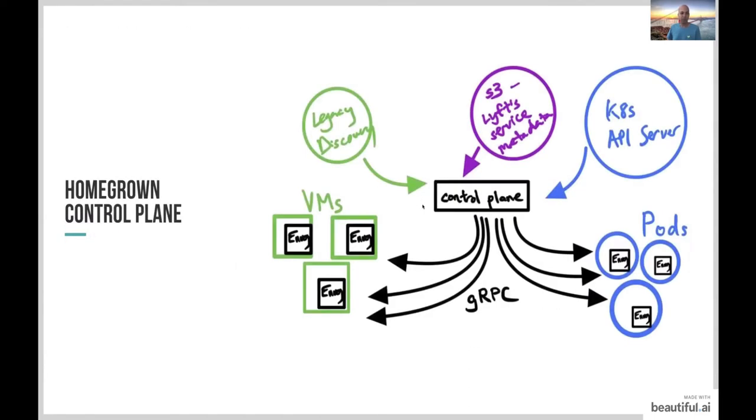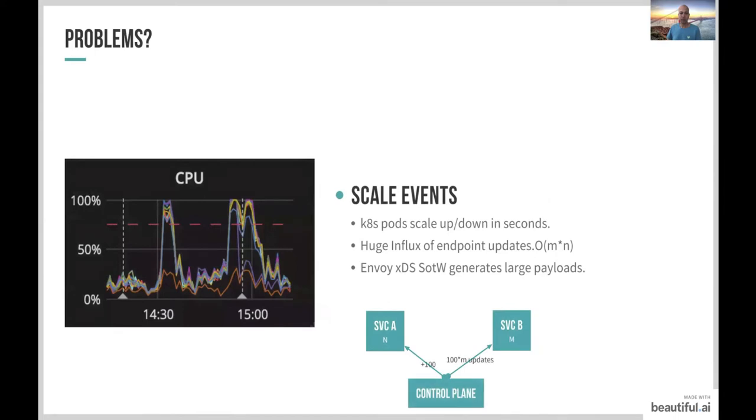I'll briefly describe a bit about the before and after model of how service discovery works at Lyft. We have a homegrown control plane based on the Go control plane library. It subscribes to endpoint updates from VM-based discovery service and Kubernetes API server. It also subscribes to cluster updates from a relatively low flux S3 files. The control plane is connected to the Envoy sidecars via gRPC. These sidecars could be on legacy VMs or containers on the box. So far so good. One striking difference between the legacy and the Kubernetes stack was that VMs take minutes to spin up, while the pods take a few seconds to be ready.